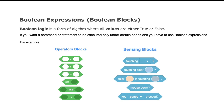Some of the sensing blocks also operate under Boolean logic — for example, whether a sprite is touching the edge or a sprite is touching a certain color. The condition will be checked: if it's true, some command will get executed; if it's false, maybe some other command will get executed. So let's look at Scratch to understand Boolean expressions better.